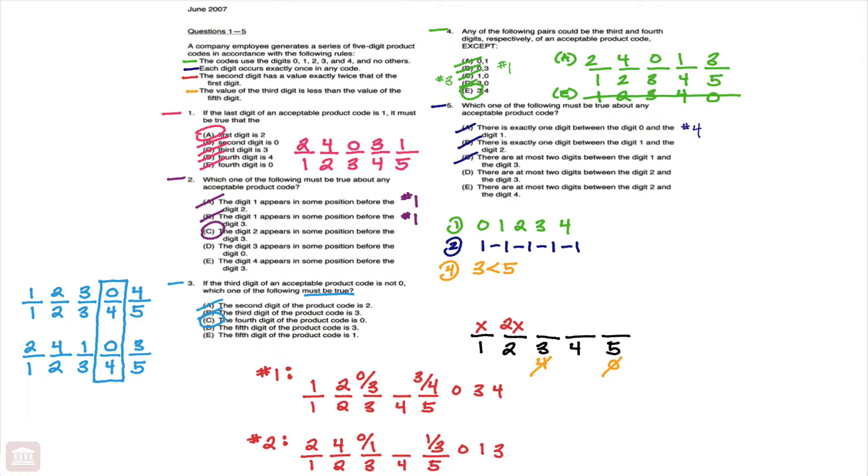Moving to D, there are at most two digits between the two and the three. Again, looking at scenario two, we see we could have three digits between the two and the three. Two could be first, three could be fifth. So, again, D does not have to be true, so D is out, which brings us process of elimination to E.